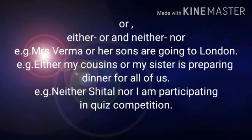Either my cousins or my sister is preparing dinner for us. Here, the closer subject to the conjunction 'or' is 'my sister,' which is a singular noun, that's why we took 'is' as a singular verb. Neither Shital nor I am participating in the quiz competition. Here, the closer subject to the conjunction 'nor' is 'I,' which is a singular pronoun, that's why we use 'am' as a singular verb.